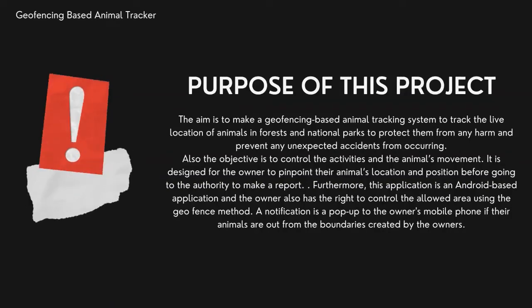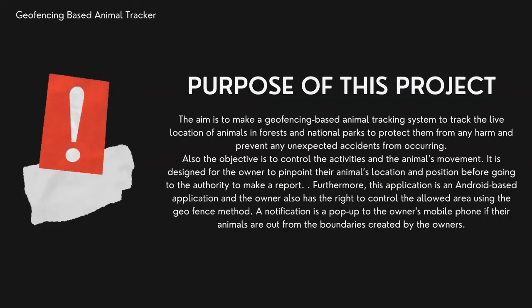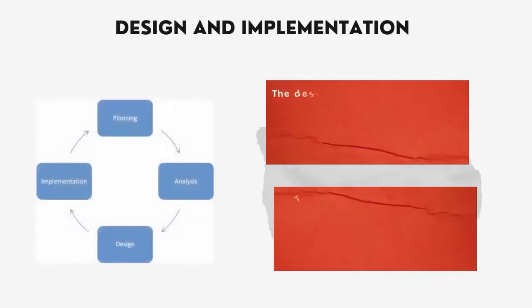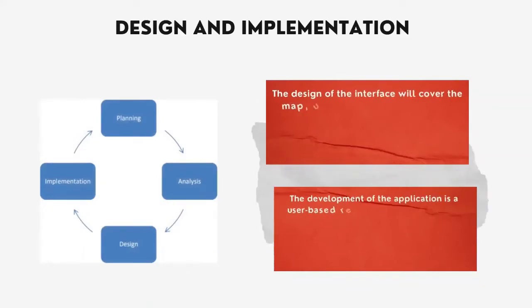A notification will pop up on the user's mobile phone if the targeted animal goes out of the boundaries that were set by the user.